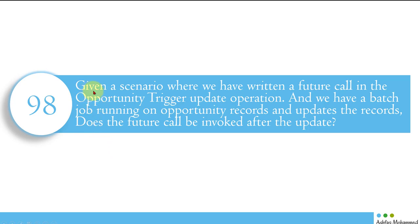Based on the last three questions, here is a scenario. Given a scenario where we have written a future call in the opportunity trigger on update operations — so when the opportunity trigger fires on update, we are calling a future method. We also have a batch job running that updates opportunity records. Step one: a trigger is written on opportunity, and from that trigger a future method is called. If I save a record from the UI, the trigger fires and the future method is called — straightforward and allowed.